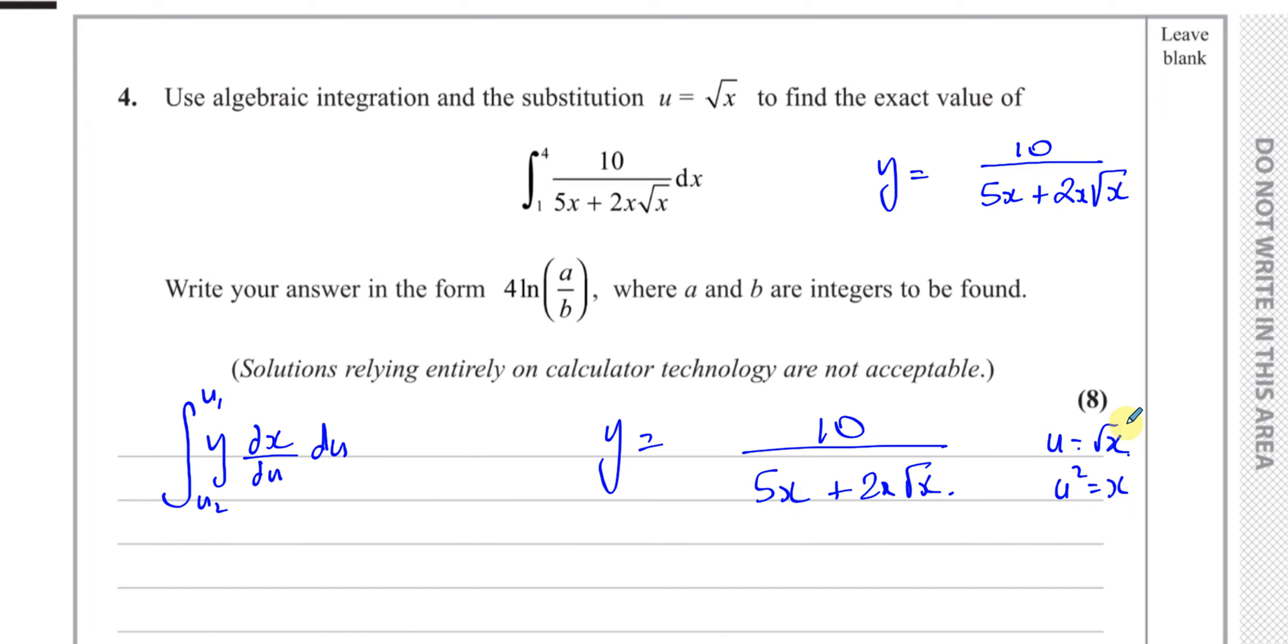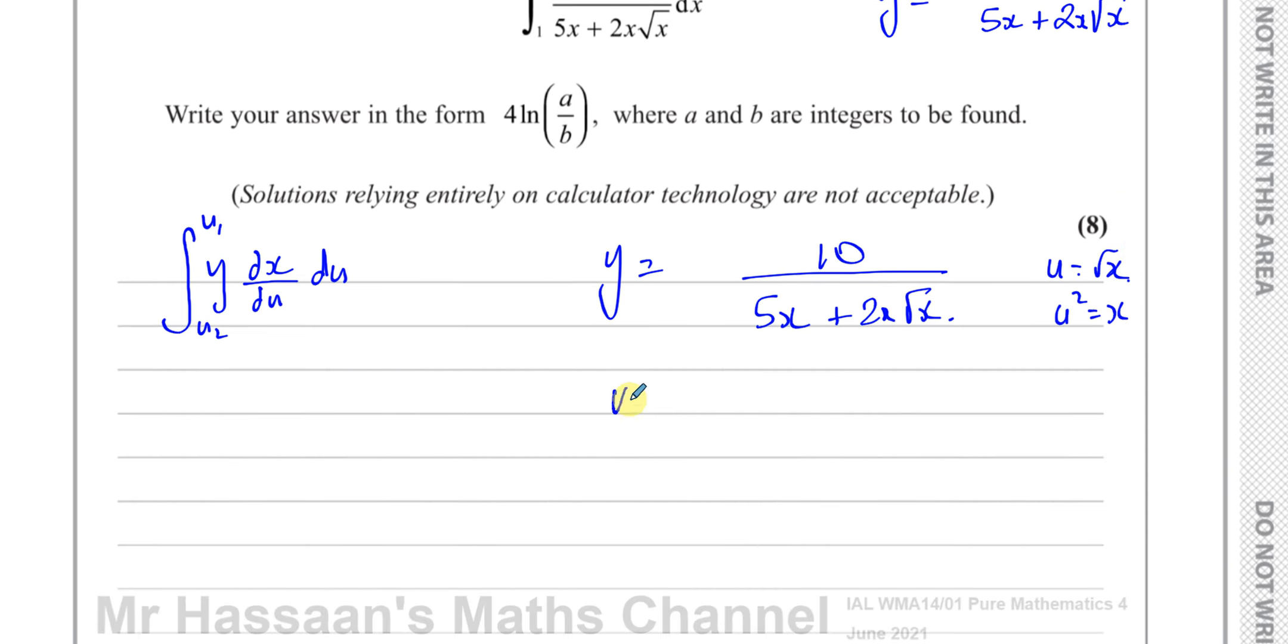So I can replace the x with u squared and I can replace the root x with u. So this y will then become 10 over, instead of 5x I can put 5u squared, and then plus instead of x I can put u squared. So 2x becomes 2u squared and root x is u. So 2u squared times u. You end up with y equals 10 over 5u squared plus 2u cubed.